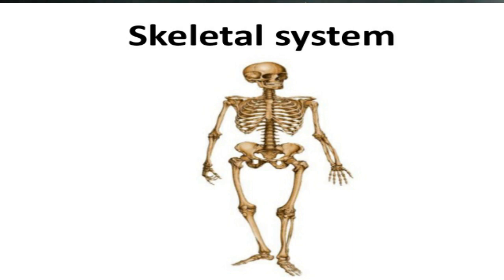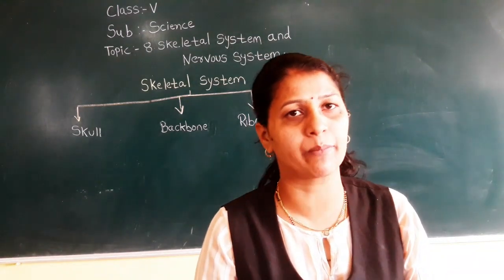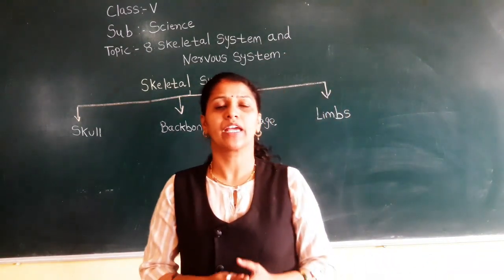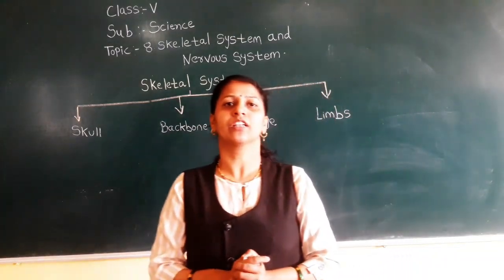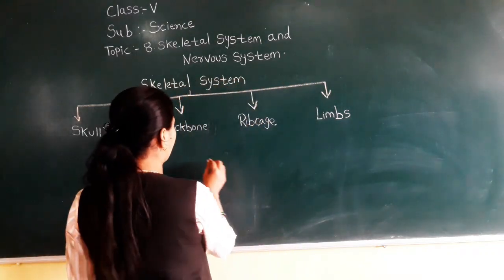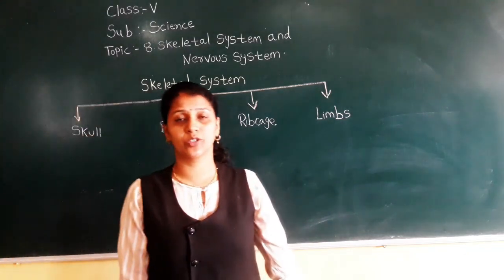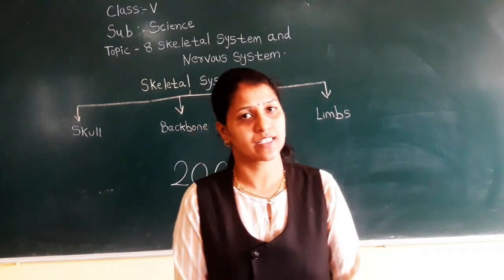This is the skeletal system. Without flesh and mass, our body looks like this — it is totally made up of bones. In an adult human being, there are 206 bones. How many bones do we have? A total of 206 bones in a human being.